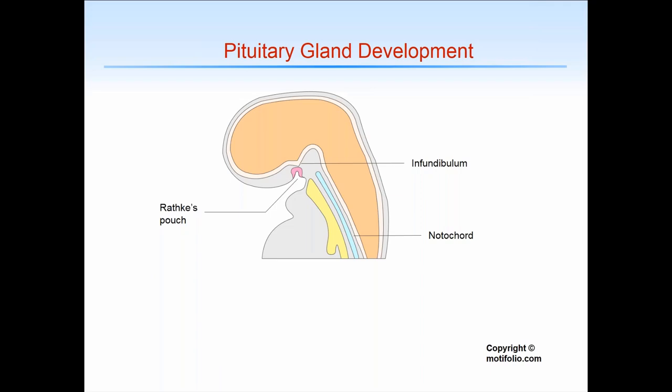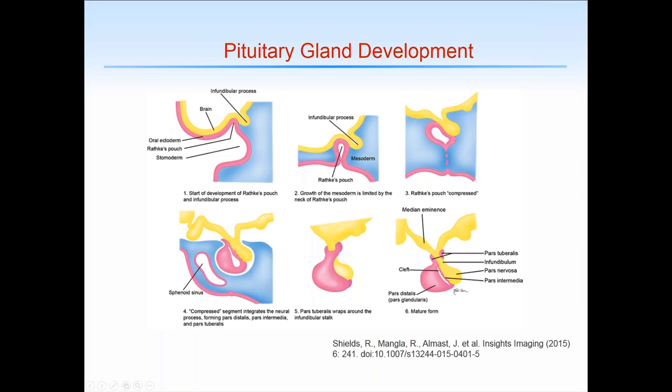What do we know about pituitary gland development? Shown here in schematic is a four-week embryo with two critical areas of note. The first is Rathke's pouch — the anterior pituitary gland develops from an invagination of Rathke's pouch, while the posterior pituitary gland develops from an evagination of what will ultimately become the floor of the third ventricle. You can see further and further invagination of the oral ectoderm at Rathke's pouch, which will later become the mouth.